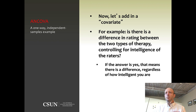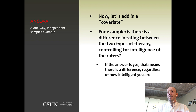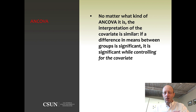In this case, the question would be: is there a difference in rating between the two types of therapy, controlling for — or regardless of — the effects of the covariate, in this case the intelligence of the raters? If the answer is yes, we could say there is still a difference even when we run the ANCOVA — for example, people enjoy talking to their mom more than eating chocolate, regardless of how intelligent they are. That's the kind of conclusion we'd draw using this 'controlling for' terminology.